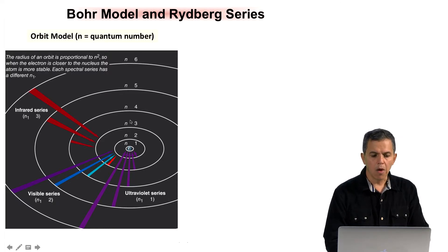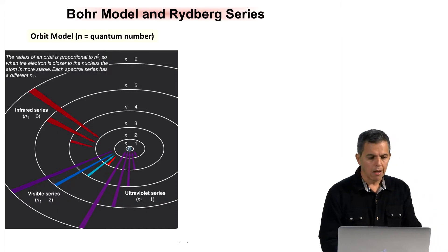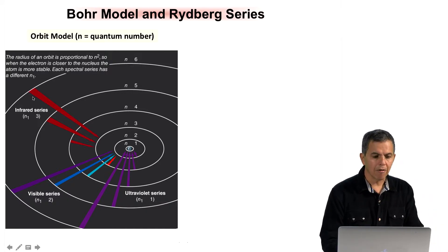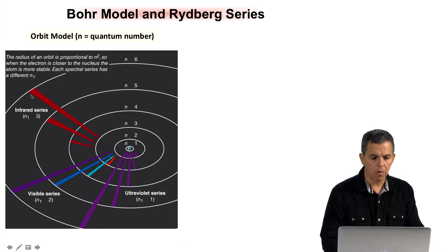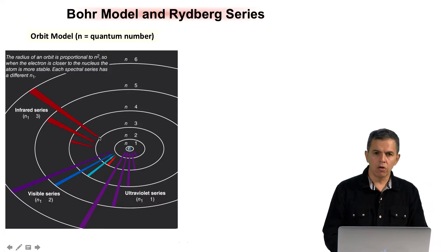In this model as well, we can use that to predict transitions that happen between different energy levels. For example, in this particular diagram, we have the infrared series in which n could be a higher number and all of them will end in n equals 3. When we have a transition from a high orbit to a lower orbit, such as n6 to n3, the energy that is released results in the emission of a photon.